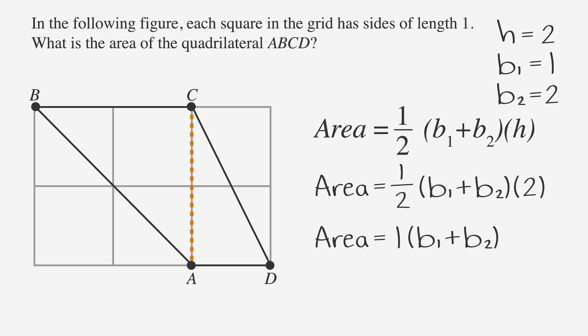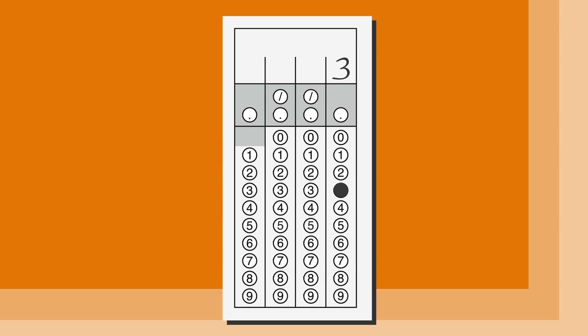Now we can plug this information into the formula, which gives us area equals 1 times the sum of 1 plus 2, or 3. Now that we know that the area of the trapezoid is 3, we can bubble that into the grid in for this problem and move on to the next question.